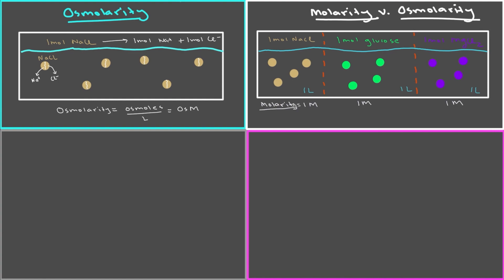Now let's calculate osmolarity. Remember, we have to consider whether the solute particles will break up or not in solution. Sodium chloride breaks up into two particles, so we end up with two osmoles instead of one mole. Two osmoles in one liter gives an osmolarity of two.